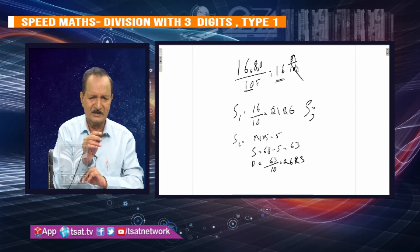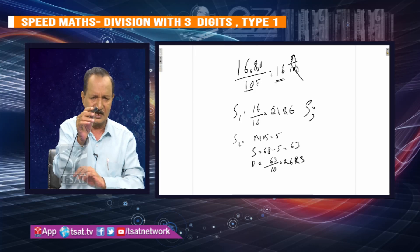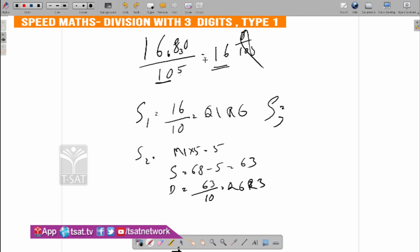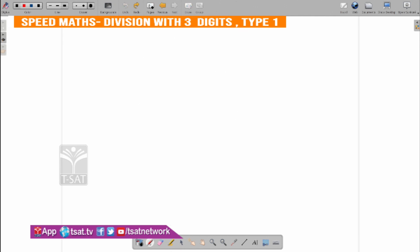Sir, 16 minus 5 is 65. 60 minus 5, 30 minus 3 is 0. 10 by 105 is equal to the value. So this is the answer. This is easy — the easiest.